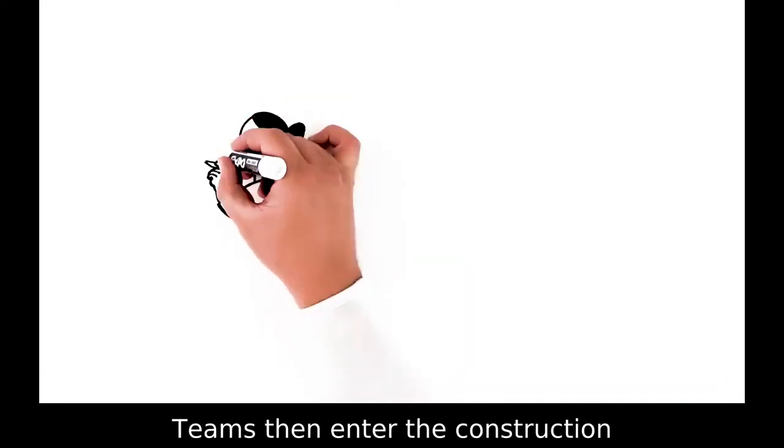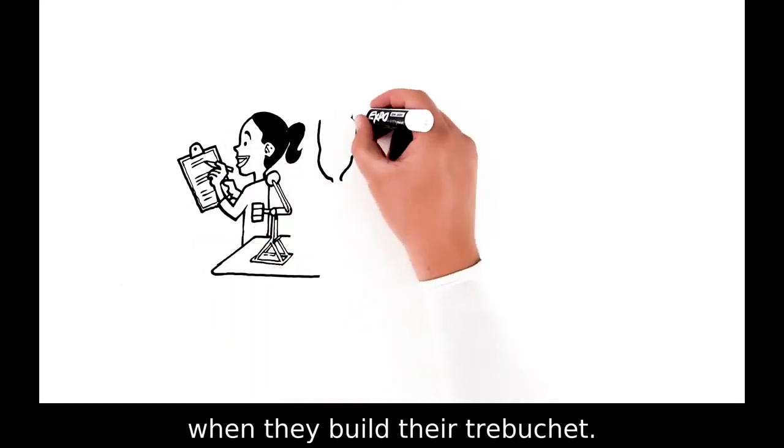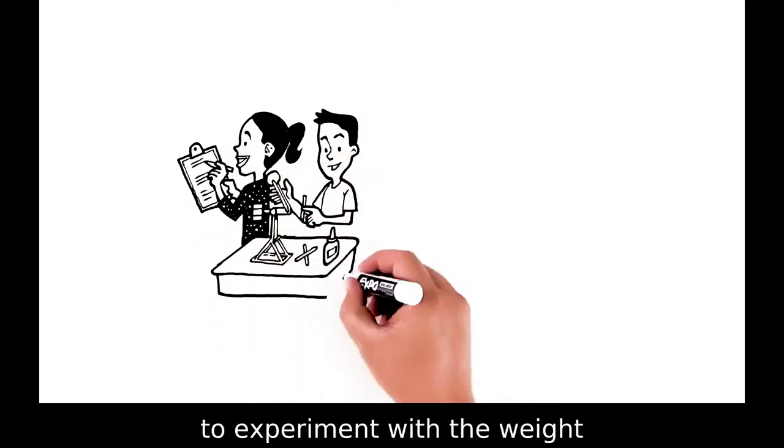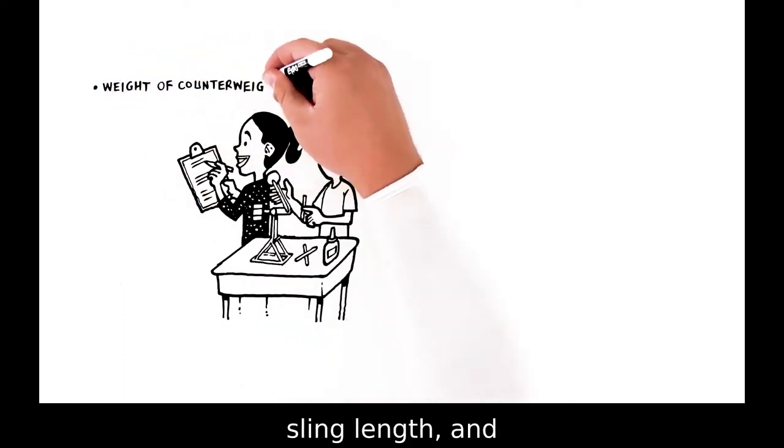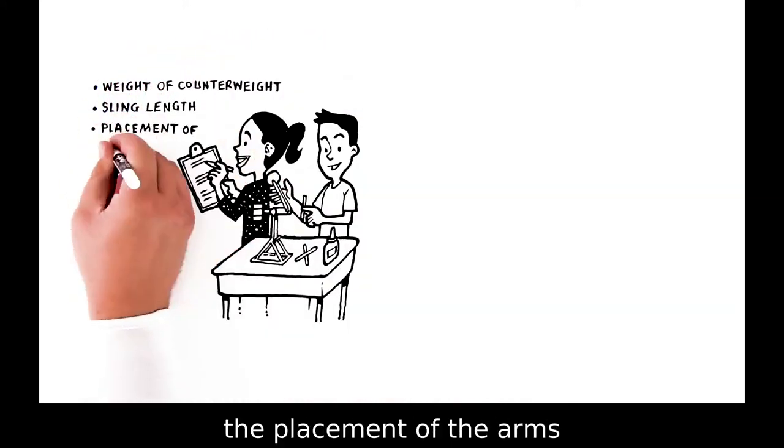Teams then enter the construction phase of the challenge when they build their trebuchet. Explain that they may want to experiment with the weight of the counterweight, sling length, and the placement of the arm's pivot point.